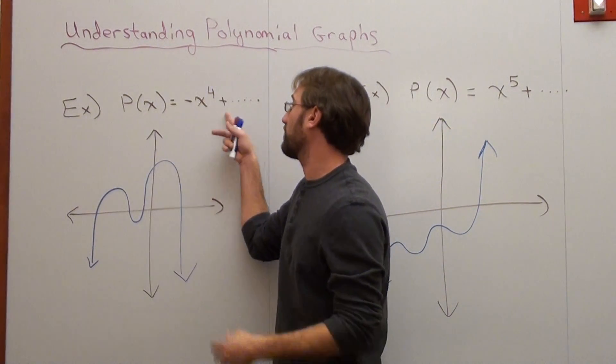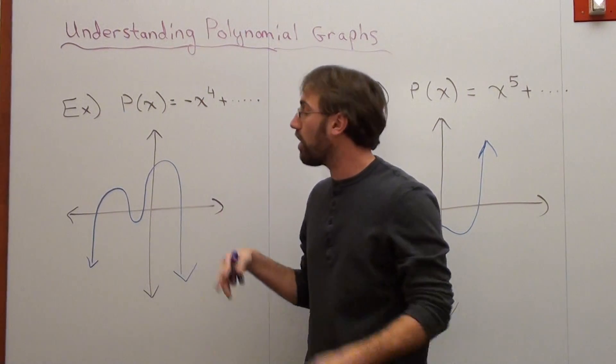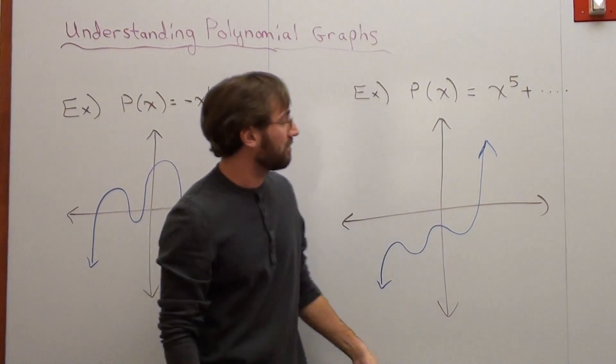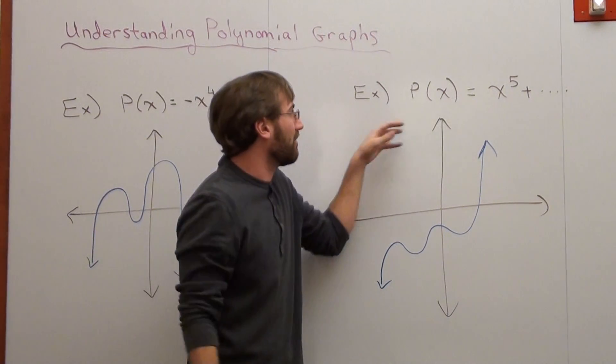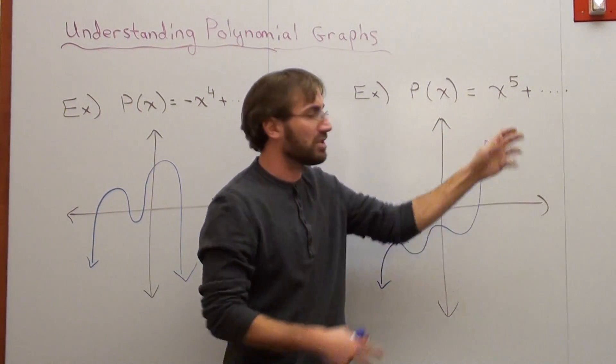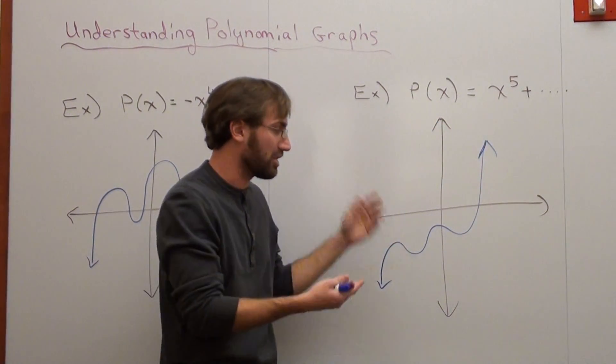I've got negative x to the fourth plus, I don't know what it's going to be because I'm just drawing a graph. And p of x equals x to the fifth plus, again, I don't really know what it's going to be.